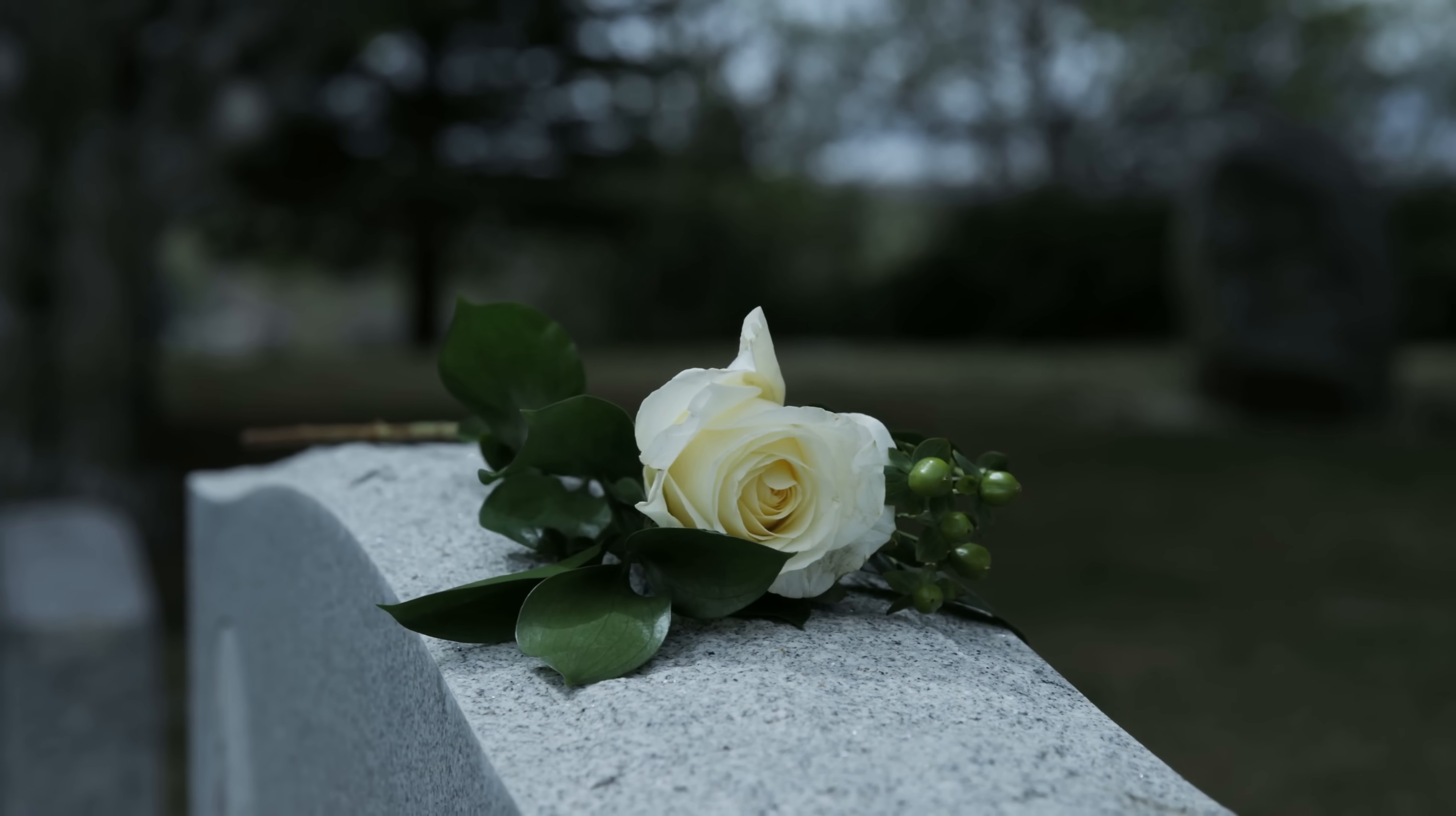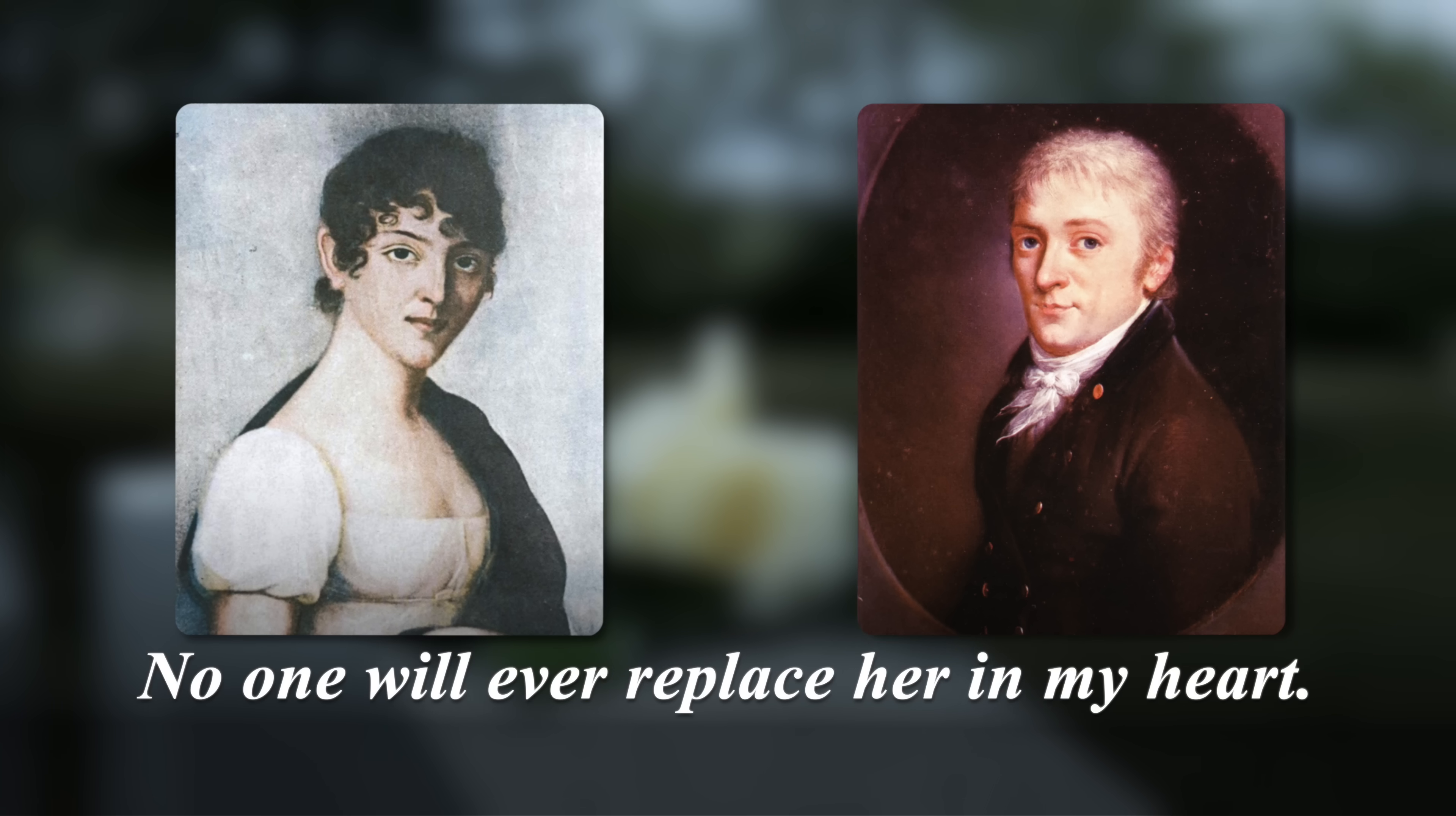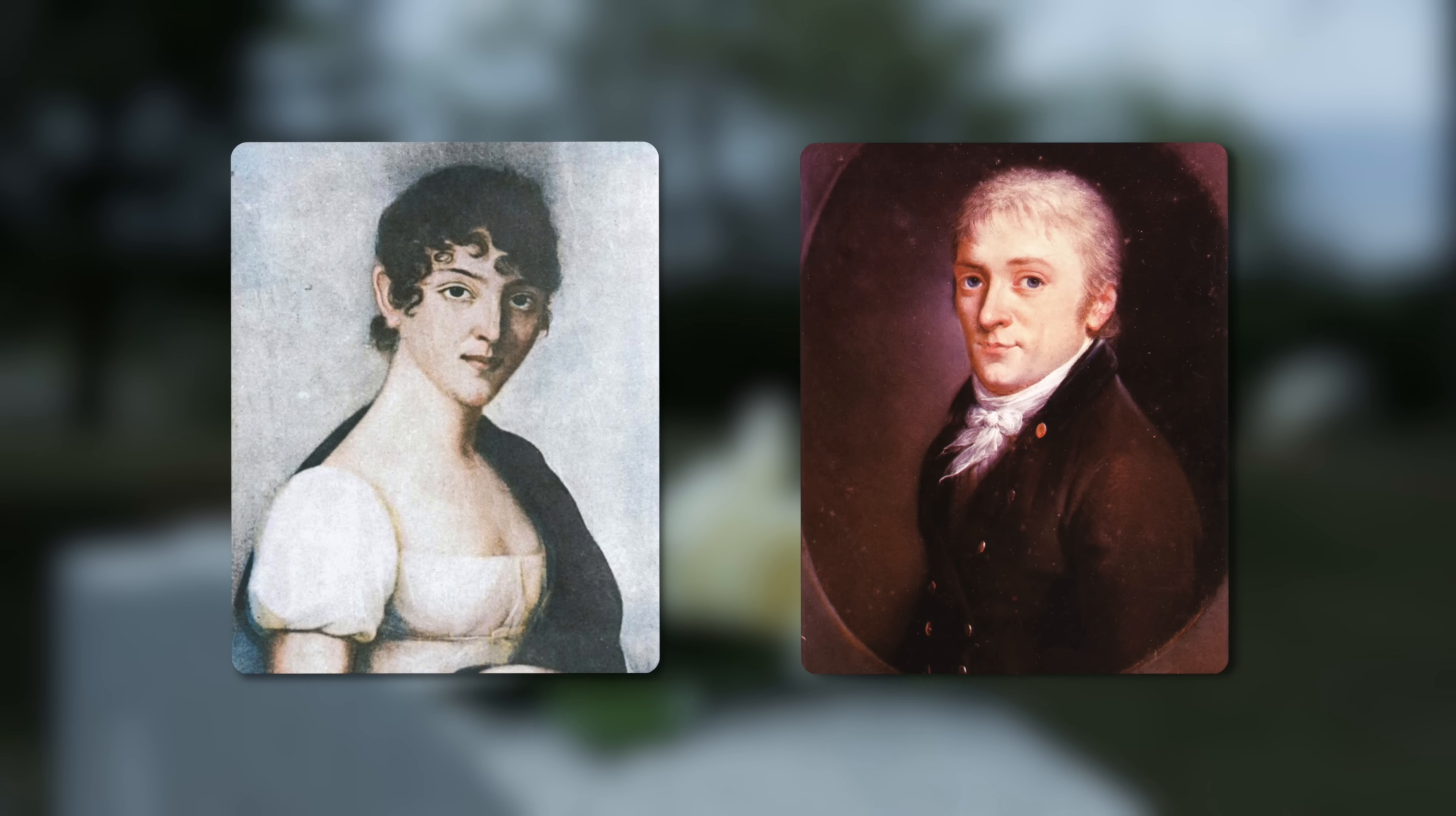A year later, Carl proposed to Mina Valdek, a good friend of his late wife. He was honest about his feelings, writing to her, You must understand, Fräulein Valdek, that Johanna was the love of my life. No one will ever replace her in my heart, but you are a good, kind person. If you are willing to accept a different place in my heart, I would like very much to marry you and bring up a family with you. They married and eventually had three children of their own.